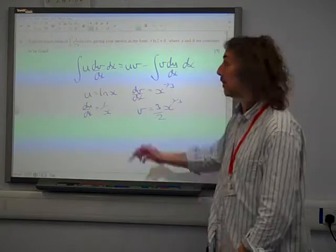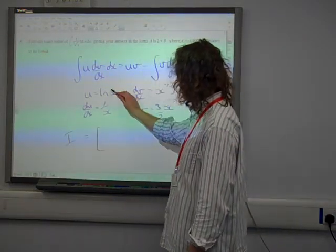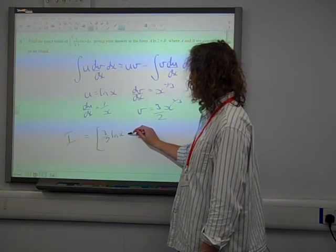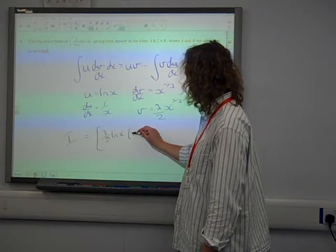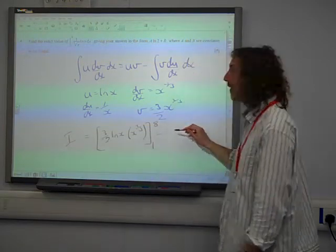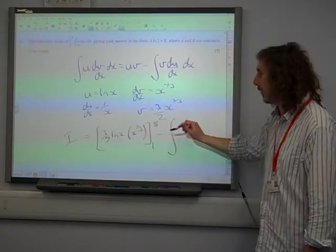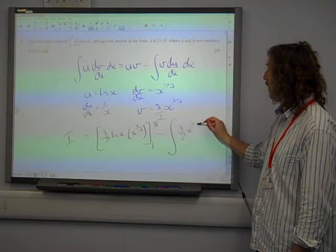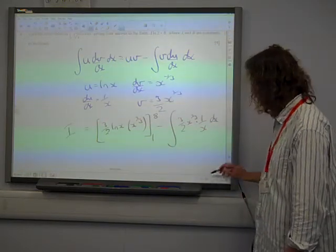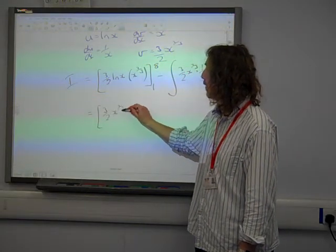Right. So, put it together. Our integral is U times V, that's that, times that one, 3 over 2 ln(x) times x to the two thirds, between 1 and 8. Take away the integral of V*dU/dx, which is 3 over 2 x to the two thirds, times 1 over x dx. I'm going to save my working out my limits for a little bit.